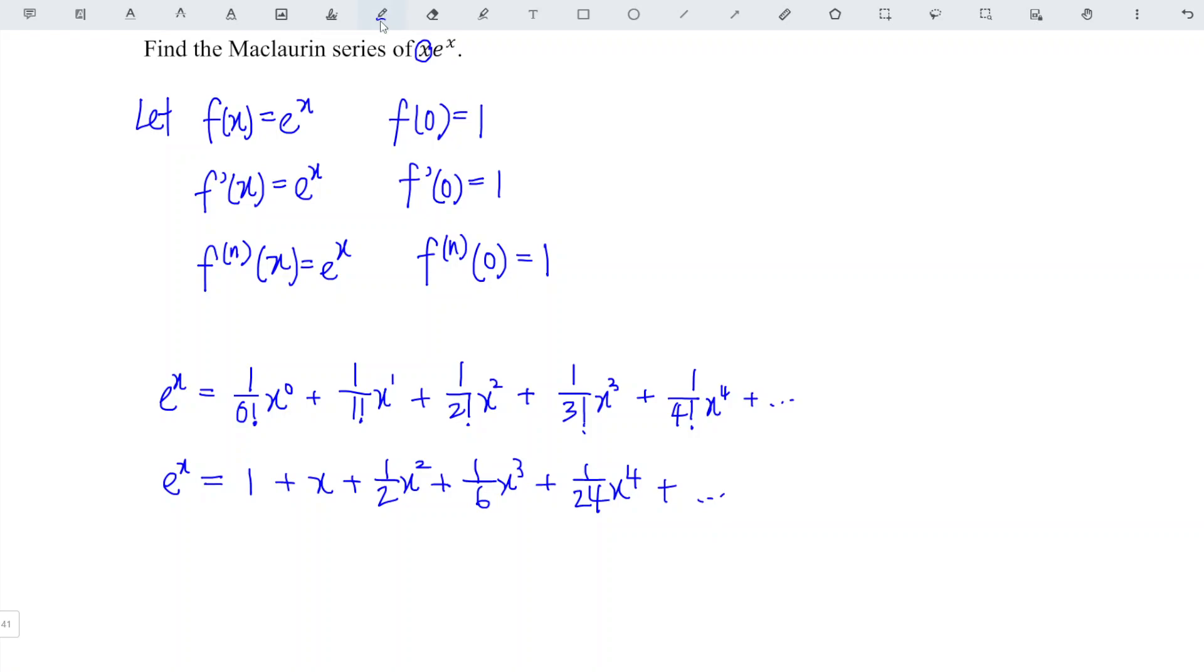What we need here is to multiply both sides by x since we have x here. So the Maclaurin series of x times e^x is equal to x times 1 is x, plus x times x is x^2, plus 1/2 x^3 plus 1/6 x^4 plus 1/24 x^5 and so on.